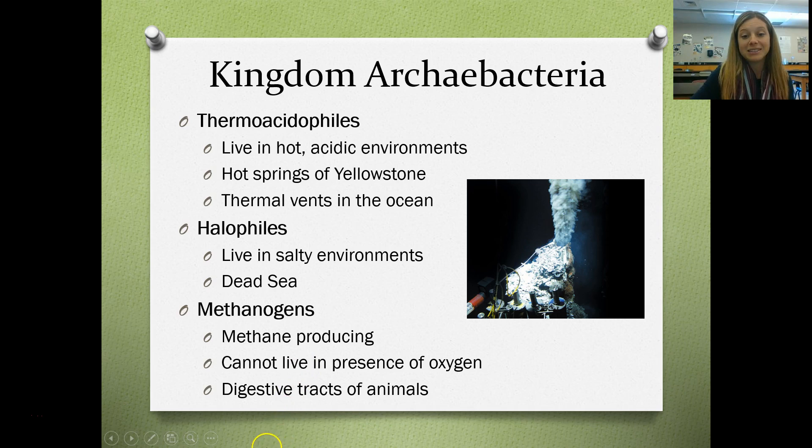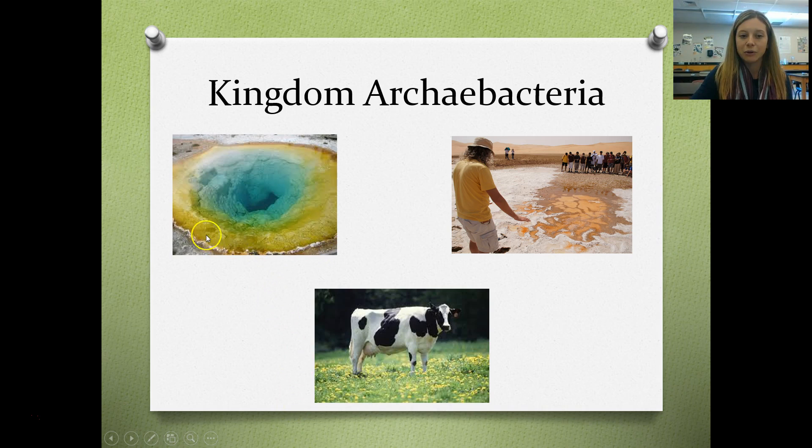All that goldish stuff around the ring of this hot spring is archaebacteria. There are some halophile archaebacteria shown here, and plenty of methanogens live in the digestive tracts of cows to help them digest the grass that they eat.